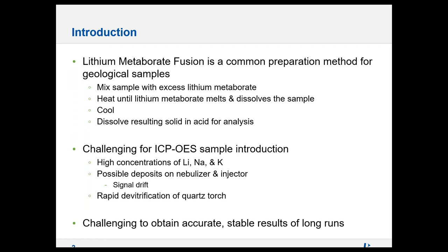The specific ingredients in the fusion flux vary with sample type, as do the dissolution acids used. These fusion samples are particularly challenging for ICP analysis. Depending on the flux material, they contain very high concentrations of lithium, sodium, and potassium. These salts deposit on the torch, injector, and nebulizer, eventually leading to signal drift. More often than not, the deposits result in a reduced signal leading to failed quality control samples, requiring corrective actions such as cleaning and recalibration. In addition, this high salt matrix causes rapid de-vitrification of the quartz torch.